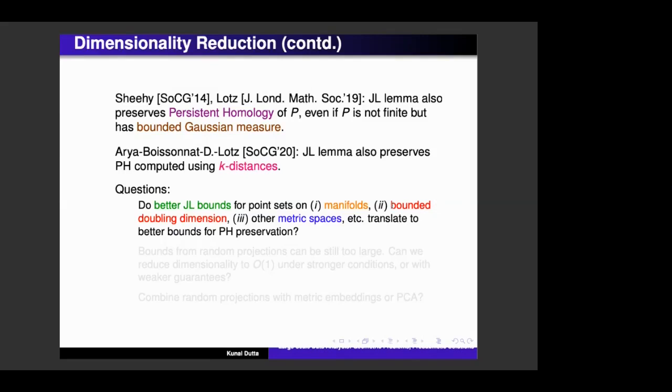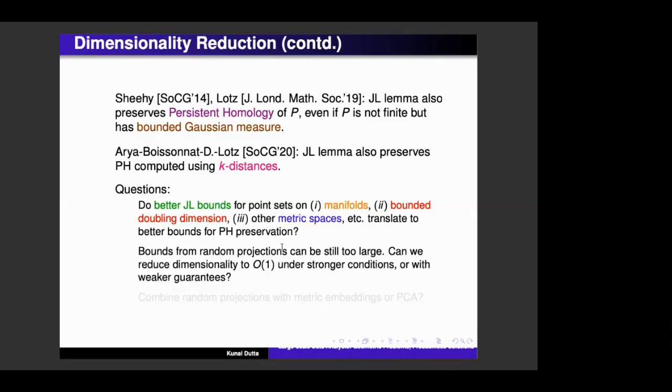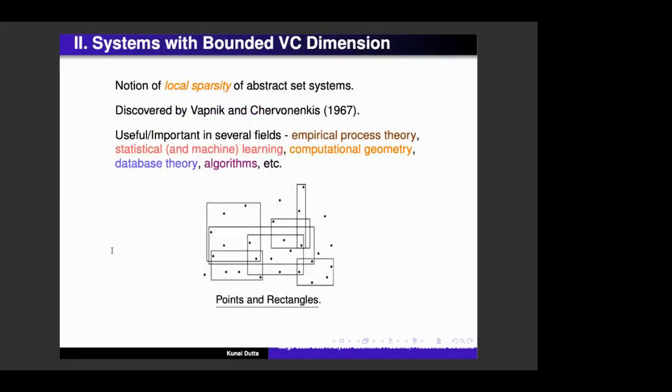Or if we know that the point set has bounded doubling dimension or, you know, for other non-Euclidean metrics, what kind of bounds we can use, we can obtain using random projections? Okay, so then there are some other questions like, can we reduce dimensionality to get some constant dimension under maybe stronger conditions, and still further questions combining with metric embeddings or principal component analysis?